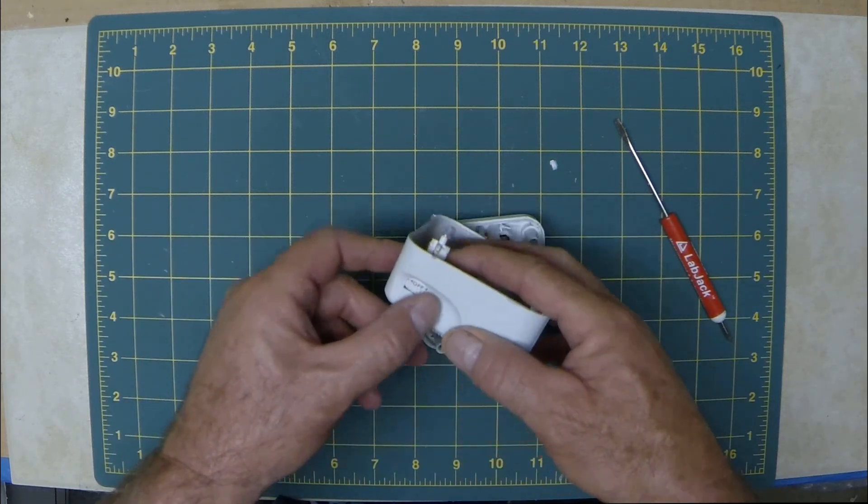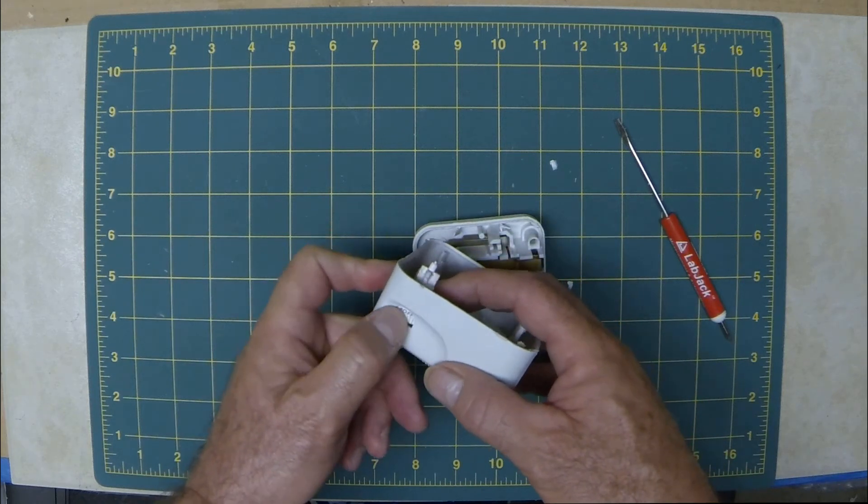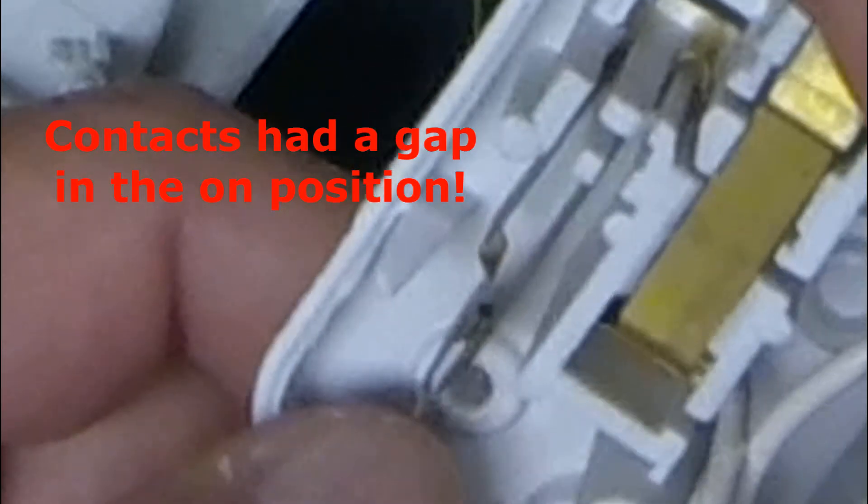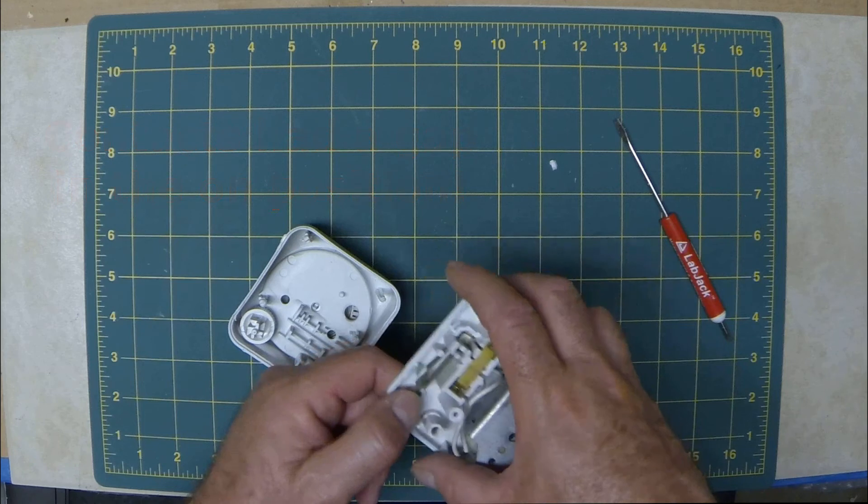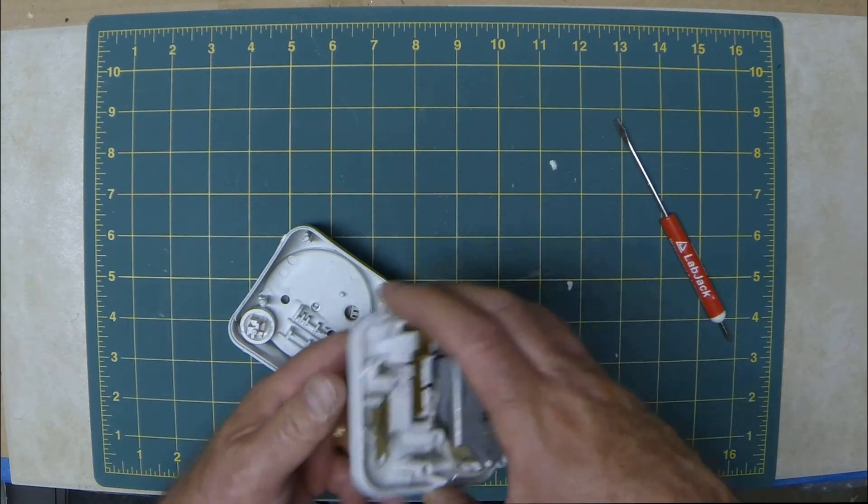As a matter of fact, the manual override right here is off, on, off, on. There was a gap in the contacts probably because they just got eroded so much over the years.